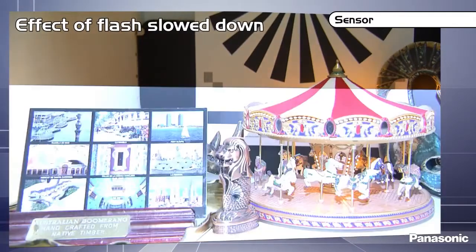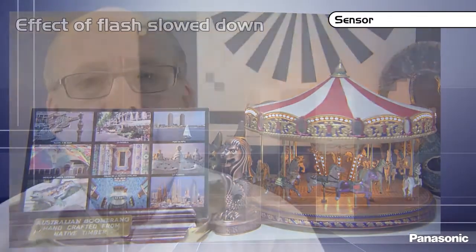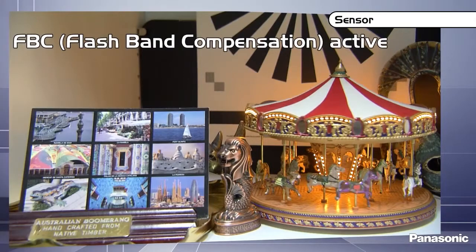Another effect linked to the rolling shutter is the flashband effect. Here's what happens when a flash is triggered. The flashband compensation function allows the camera to detect the flash and to modify the luminance of the images in order to fix the flashband effect.